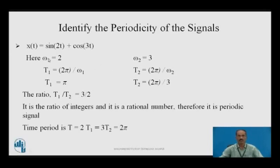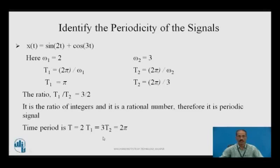Example 1: identify the periodicity of x(t) = sin(2t) + cos(3t). Comparing with sin(ω₁t) and cos(ω₂t), we get ω₁ = 2 and ω₂ = 3. Then T₁ = 2π/2 = π and T₂ = 2π/3. The ratio T₁/T₂ = 3/2, which is a rational number, therefore it is a periodic signal. Cross-multiplying gives 2T₁ = 3T₂, so the fundamental period T = 2T₁ = 2π.